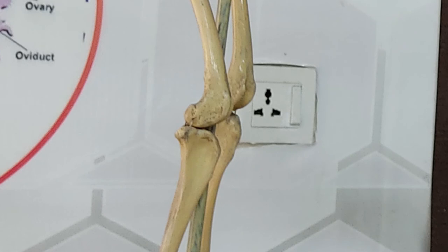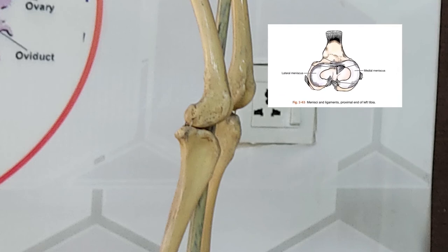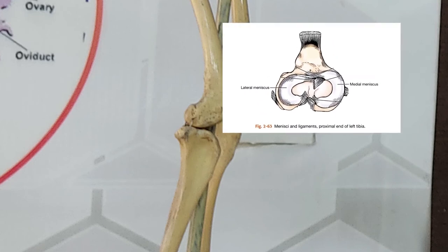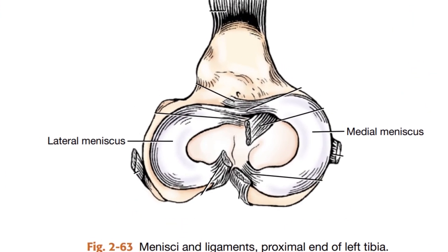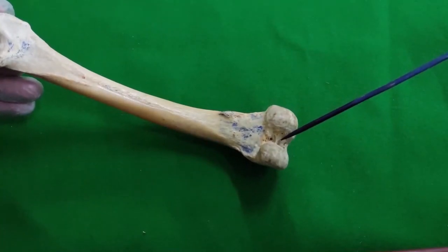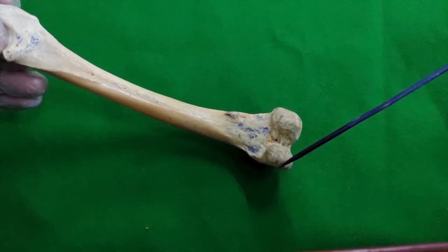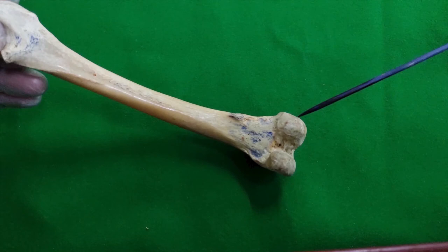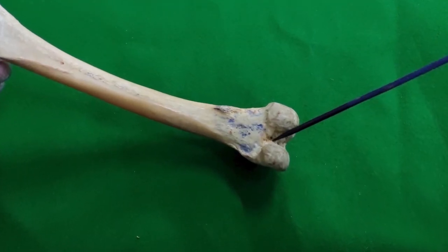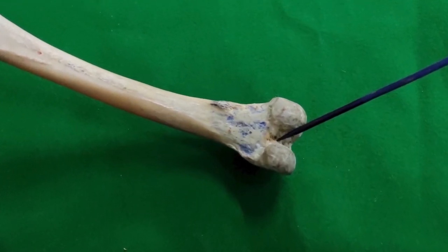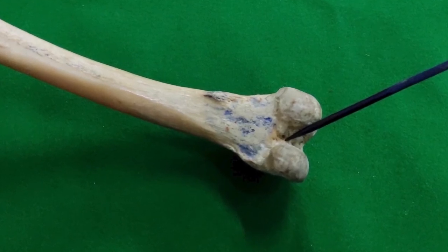The two condyles articulate with the tibia directly or indirectly. Indirectly means articulation through fibrocartilaginous C-shaped discs called menisci. The fossa between condyles is called the intercondylar fossa, where cruciate ligaments are attached, which are crucial to stabilize the stifle joint.